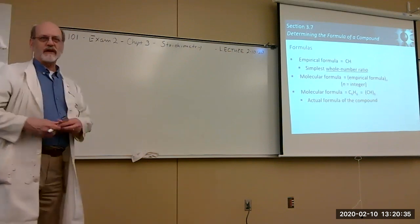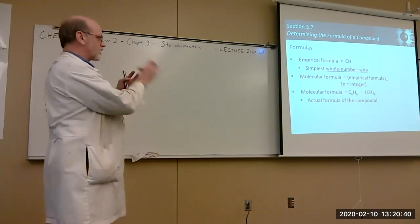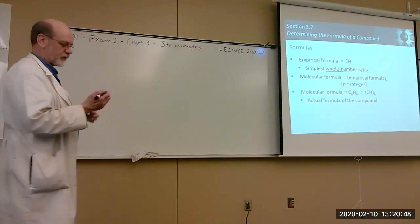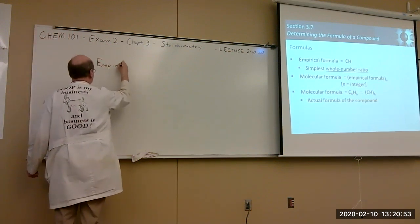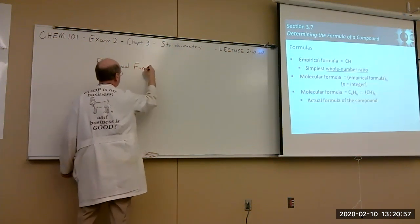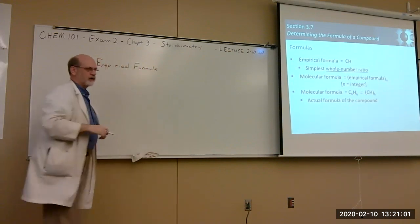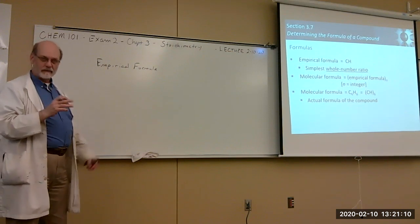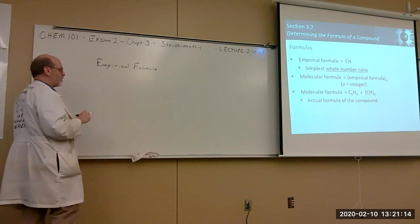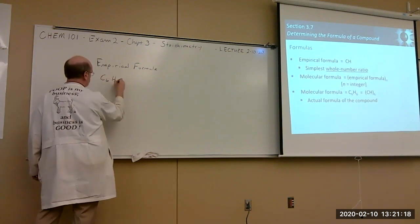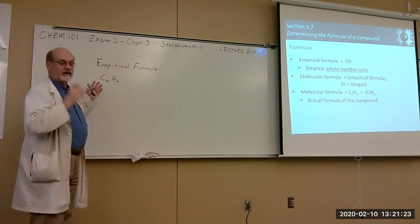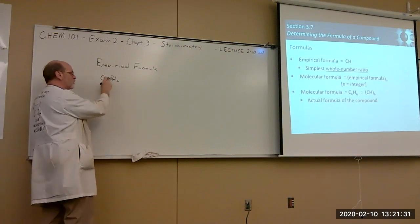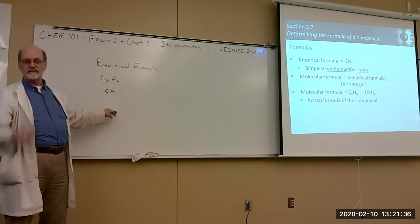You can use percent composition to determine the empirical formula. The empirical formula is the simplest whole-number ratio of atoms in a compound. For example, benzene has the molecular formula C₆H₆, but you can divide both by six to get the empirical formula CH. For a compound like C₂H₆O₂, the empirical formula would be CH₃O.